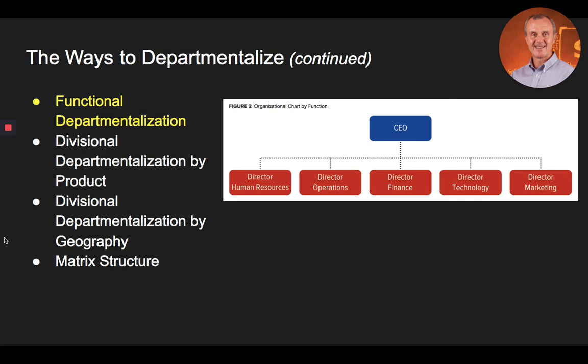An example of an organizational chart by function is provided in Figure 2 from the text, shown on your screen, where jobs are grouped into human resources, operations, finance, technology, and marketing. The strengths of a functional structure include promoting expertise, economies of scale, efficiency, and achievement of functional goals. Weaknesses of the functional structure include a slow response to environmental uncertainty, foregoing organizational goals for departmental goals, poor communication and cooperation across departments, and a disregard of organizational issues that do not concern the department.